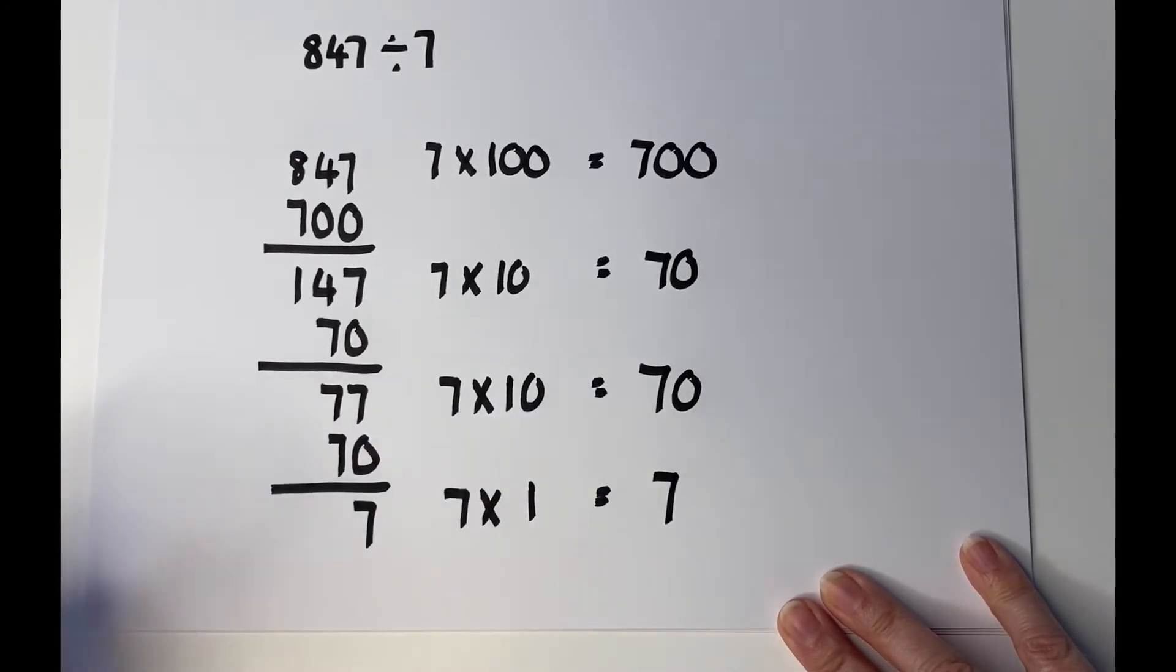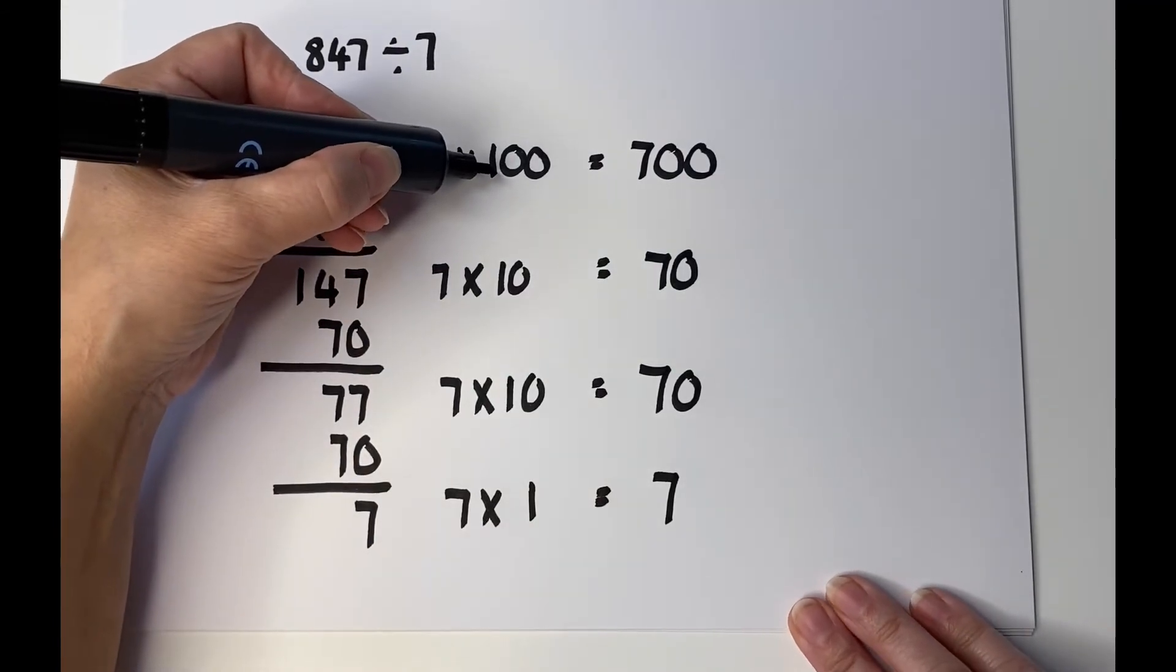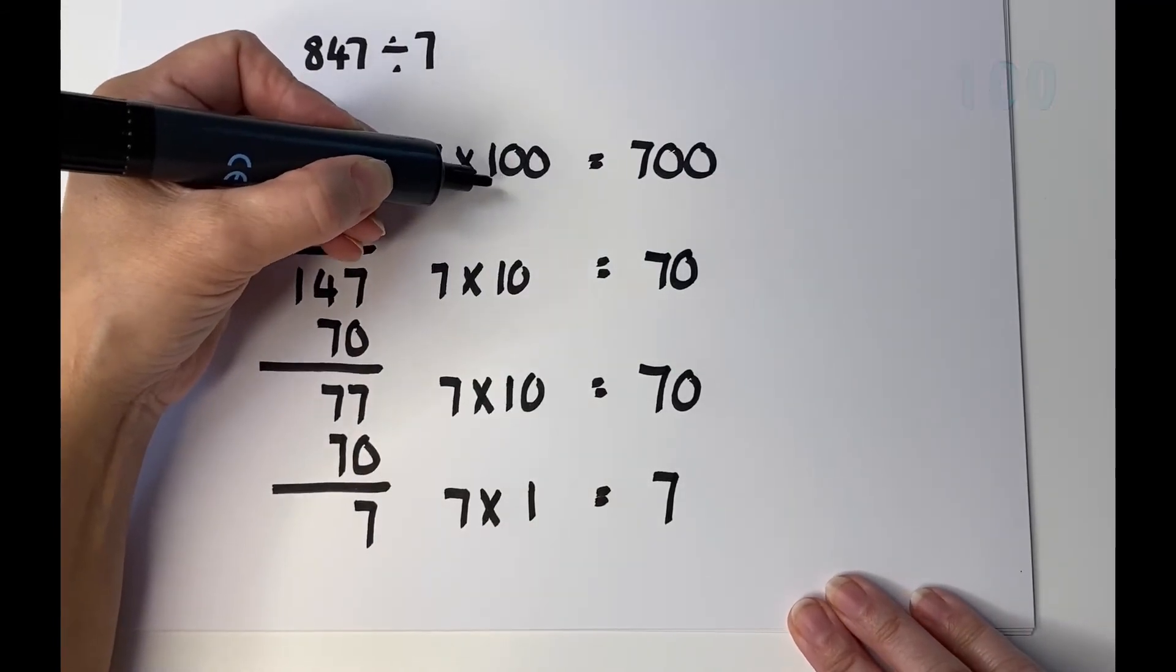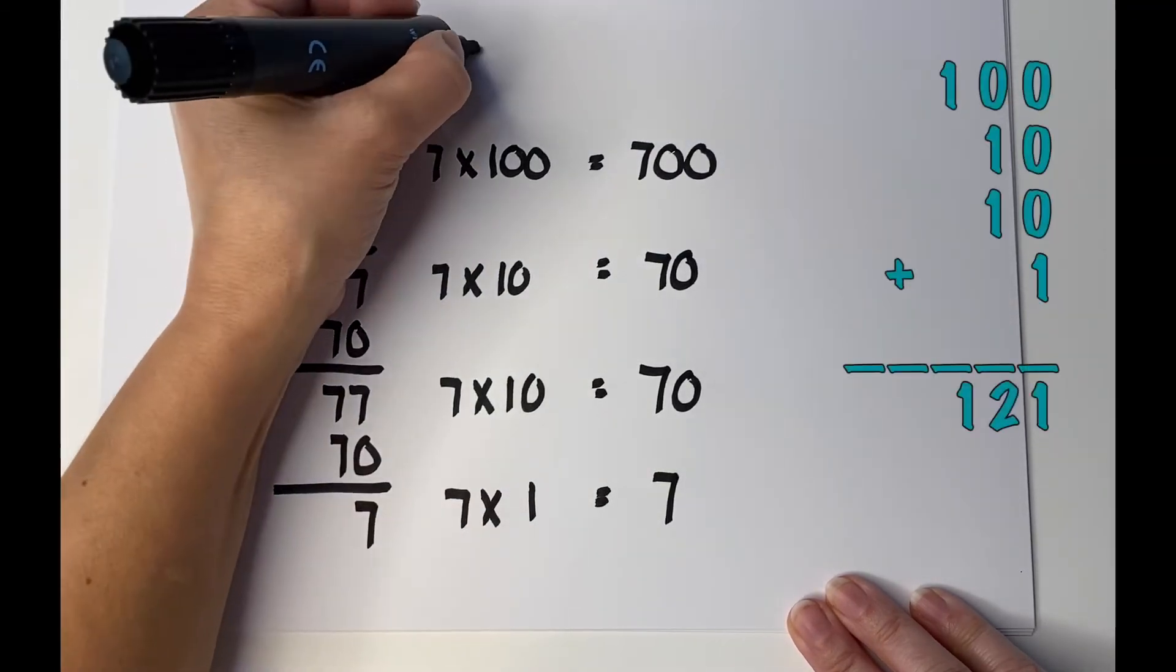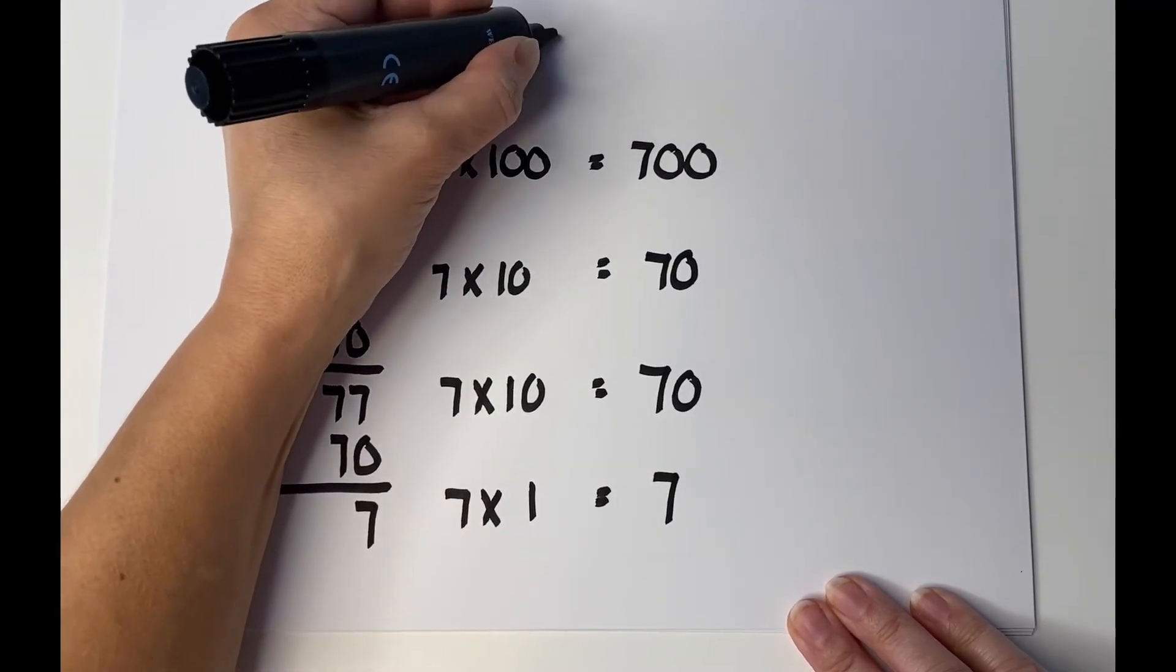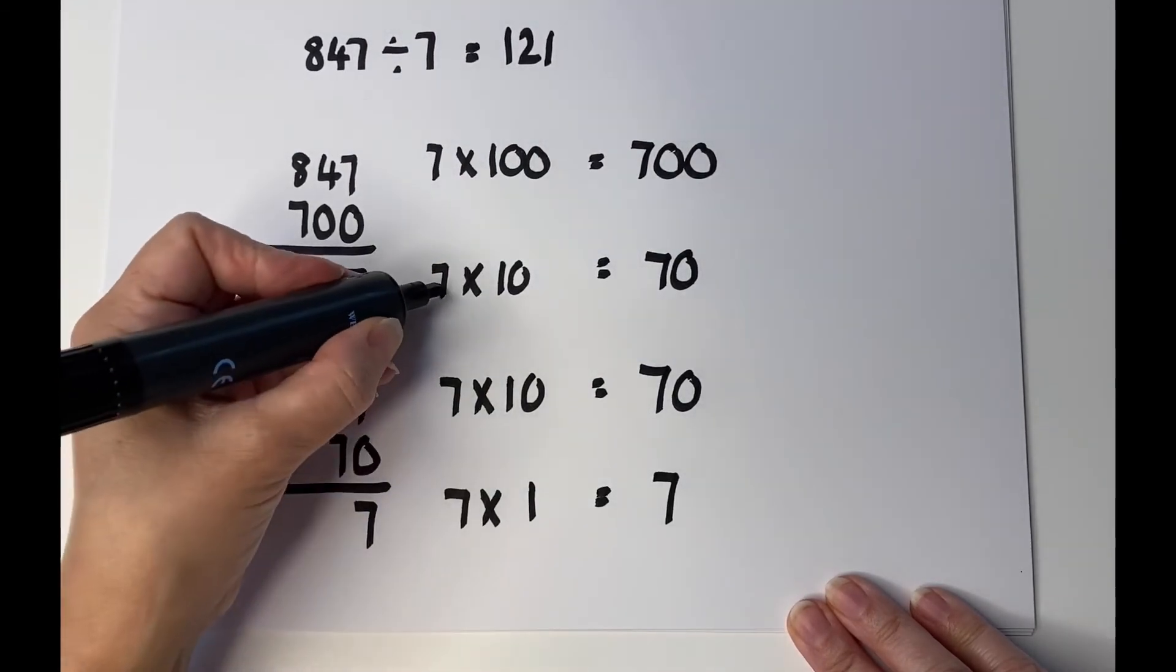Now what we need to do is count up the number of lots of 7 that we have in total. We have 100, 110, 120, 121, equals 121. As children move on, they'll spot that this is 7 times 20.